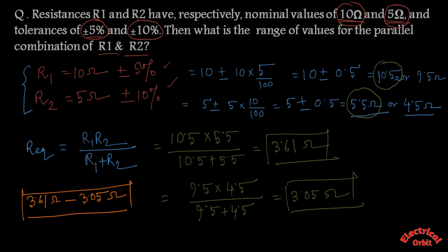So if we consider these tolerances and determine a parallel resistance equivalent of these two resistances, we will get a range between this. I think this concept is clear to you. If you have any doubt, mention in the comment section below. Thank you.